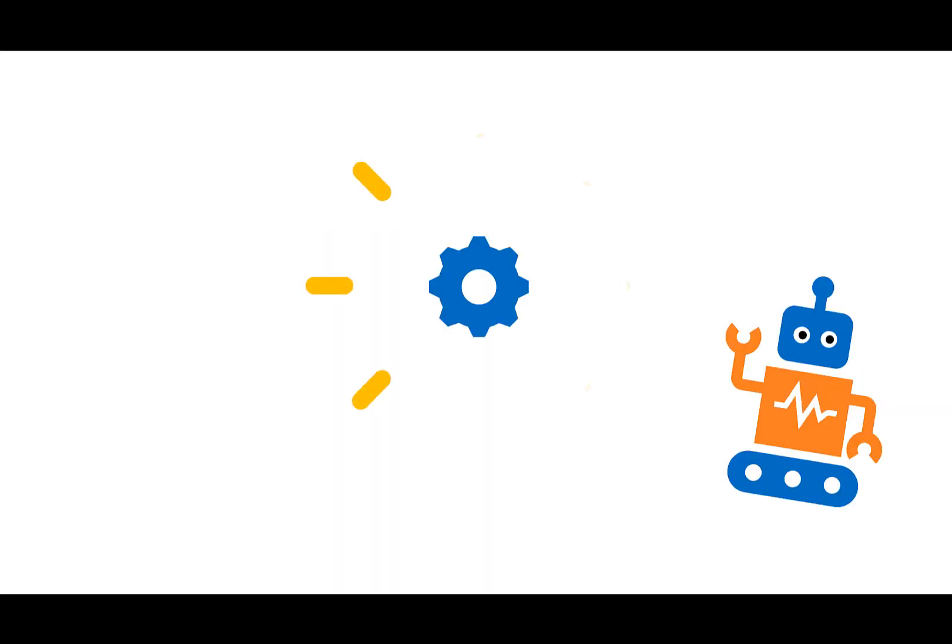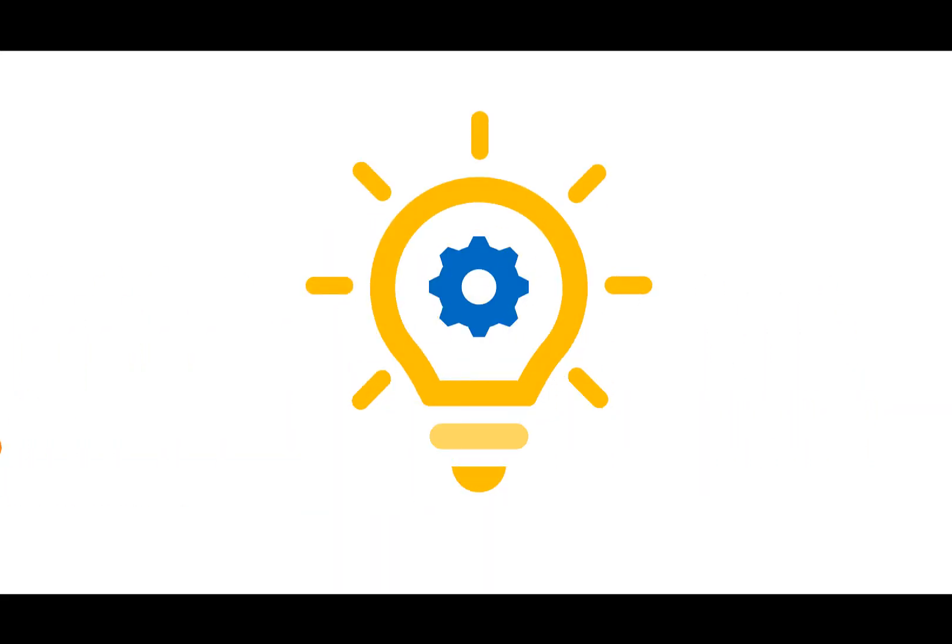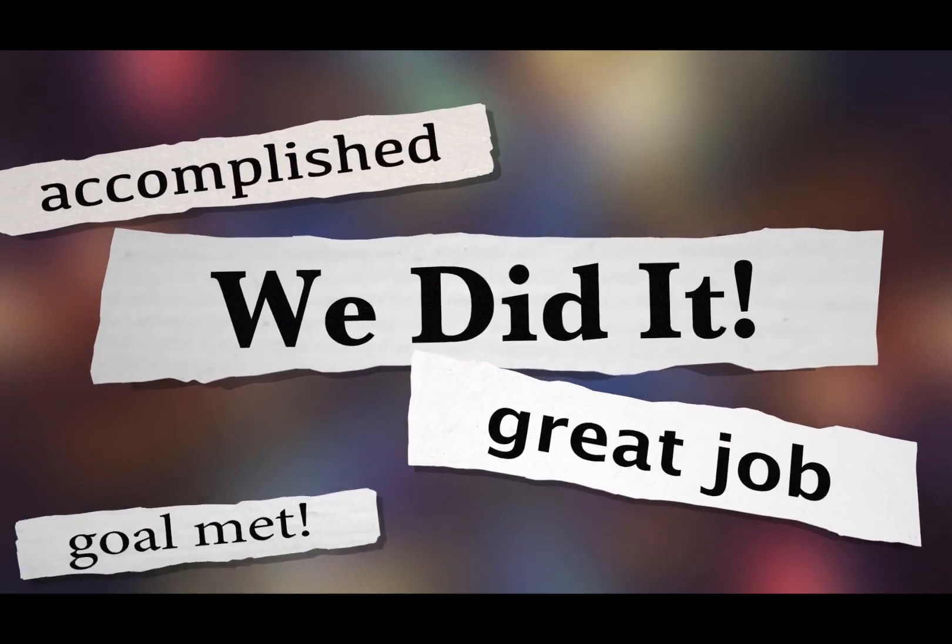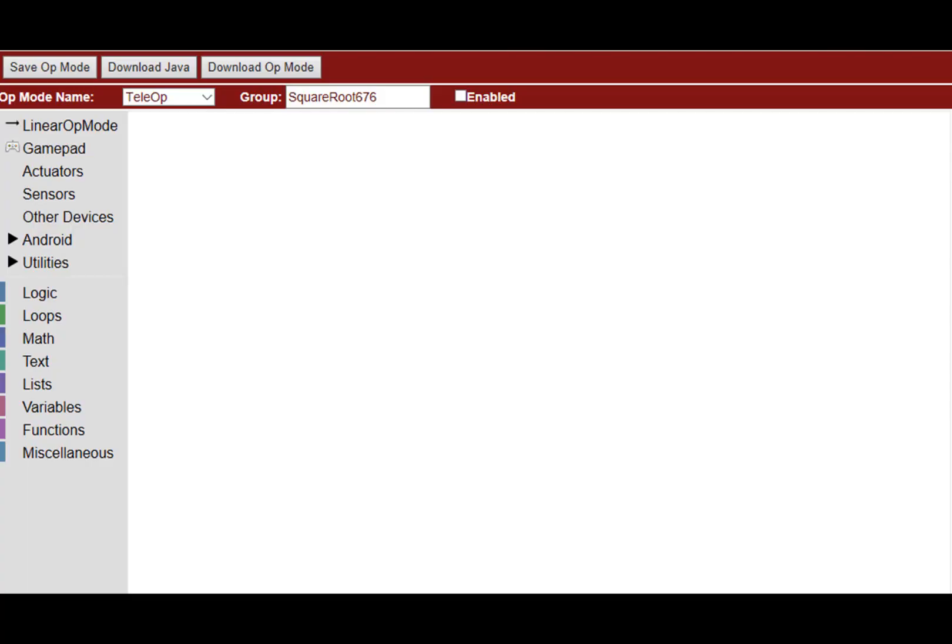Welcome back to Computational Thinking. In this video, we're going to introduce the FTC Blocks toolbox to decompose the square root of 676. We already know how to do that, even without a calculator. Well, can you do it in blocks?